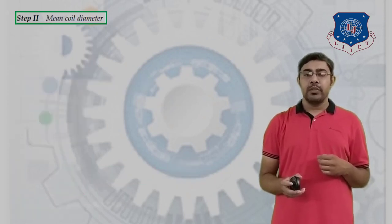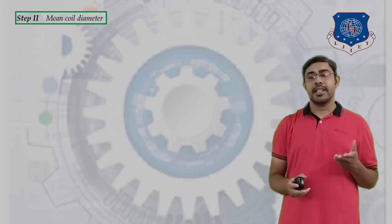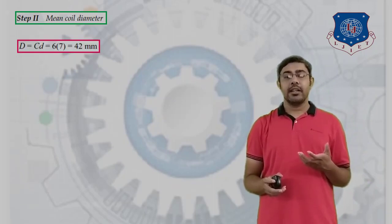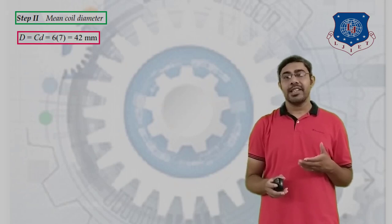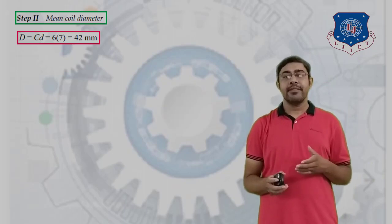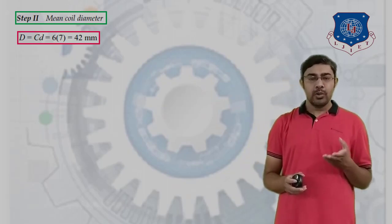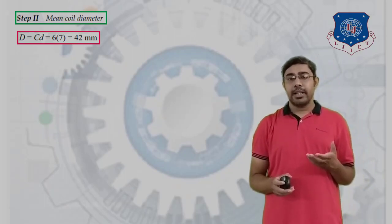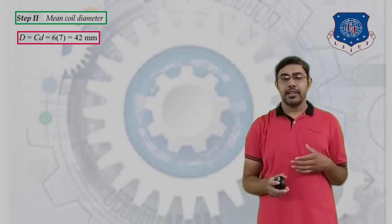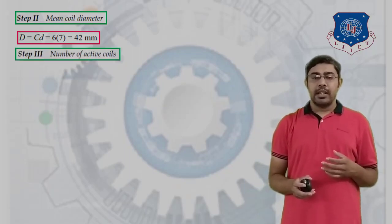Step 2: Calculate the mean diameter. Using the spring index relation C = D/d, we get D = C × d. With C = 6 and d = 7 mm, the mean diameter D = 6 × 7 = 42 mm.